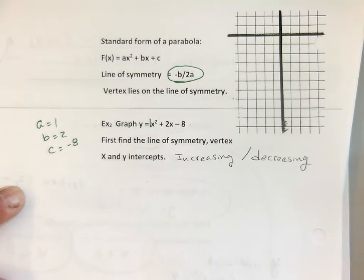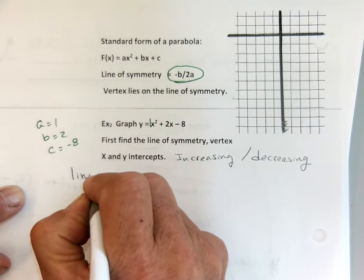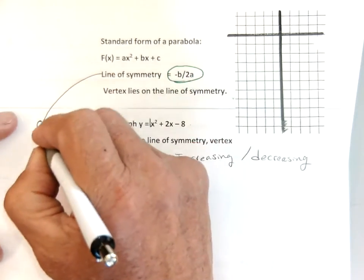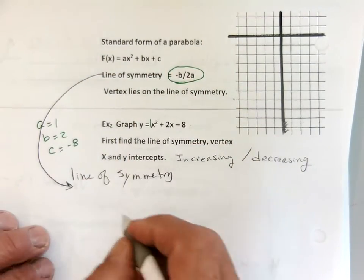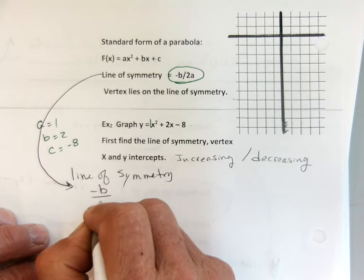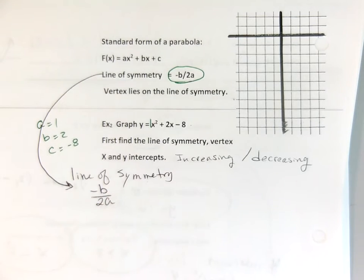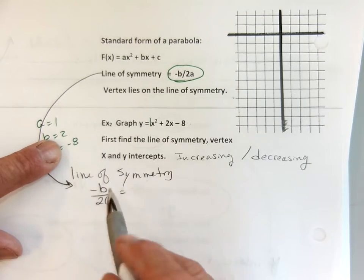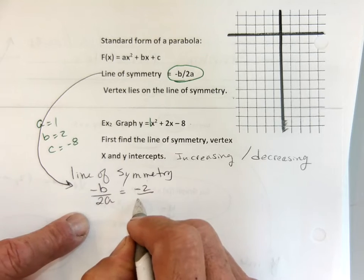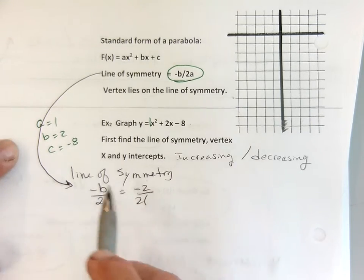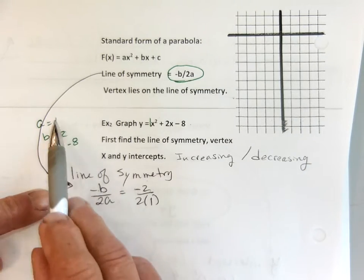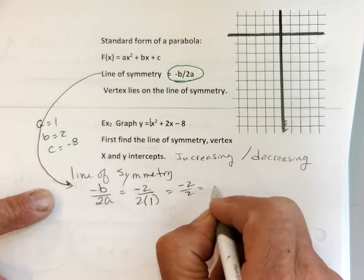Let's find the line of symmetry. I'm going to use my negative b over 2a formula. b is 2, a is 1. So I'm going to put negative 2 over 2 times 1. That's negative 2 over 2, which is negative 1.